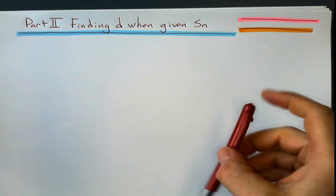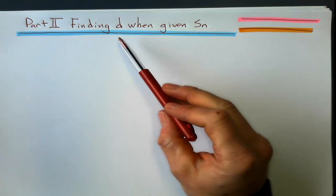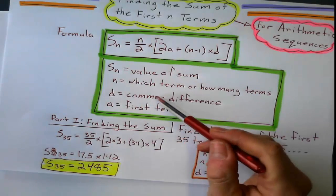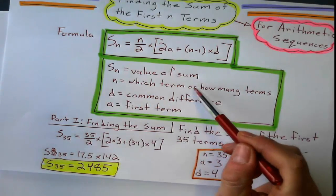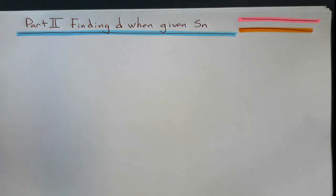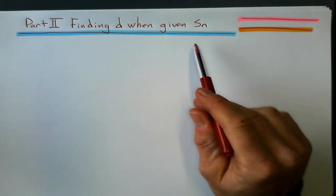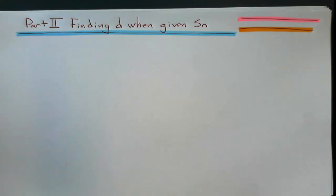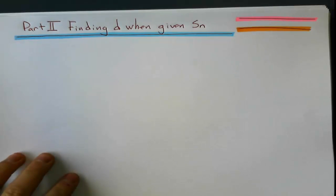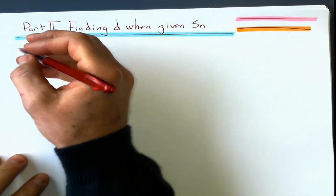So part 2, what does this mean in English? That means we're going to find other things like finding the common difference or the first term or which term it is when we're given the sum of the terms. So we're going to be working a little bit backwards here.